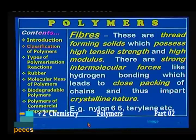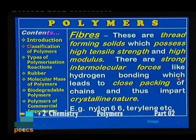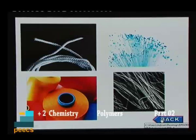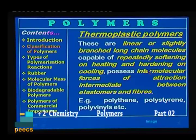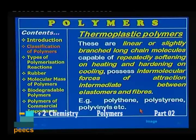Next are fibers — thread-forming solids which possess high tensile strength and high modulus. There are strong intermolecular forces like hydrogen bonding, which leads to close packing of the polymer chains and imparts crystalline nature to these polymers. Examples are nylon 6,6 and terrylene. Next, thermoplastic polymers are linear or slightly branched long-chain molecules capable of repeatedly softening on heating and hardening on cooling. They possess intermolecular forces of attraction intermediate between elastomers and fibers. Examples are polythene, polystyrene, and polyvinyls.